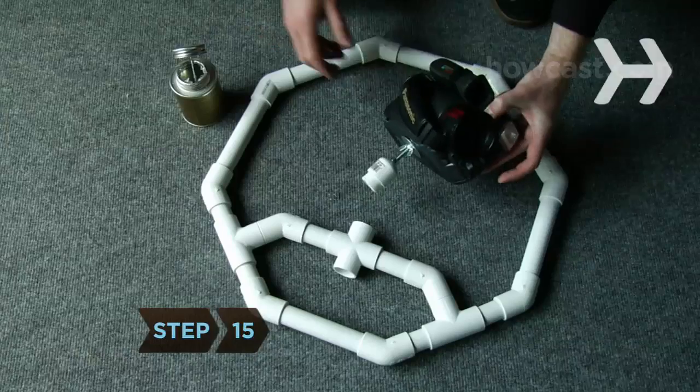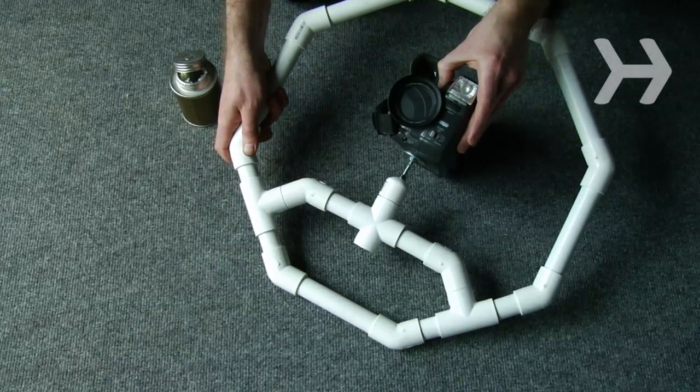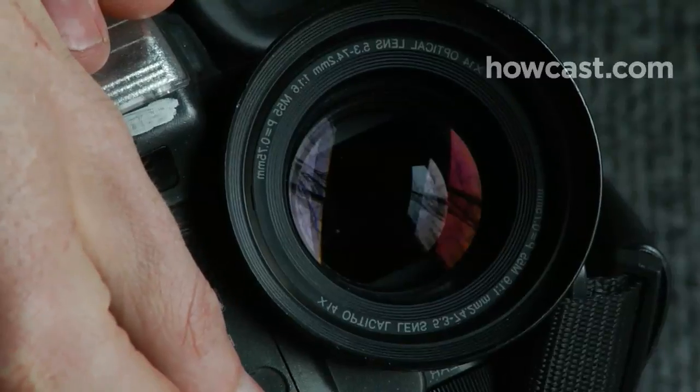Step 15. Once your camera is secured to the bolt, attach the assembled mount to the top of the cross-connector in the center of your rig and cement the connecting PVC. You're ready to start recording, one steady shot at a time.